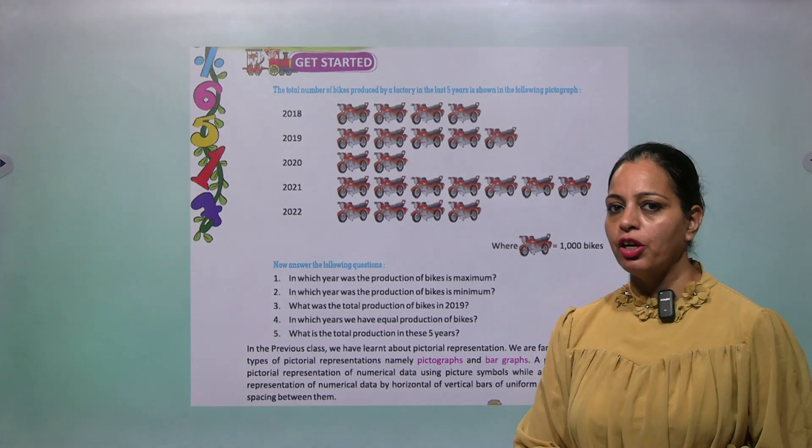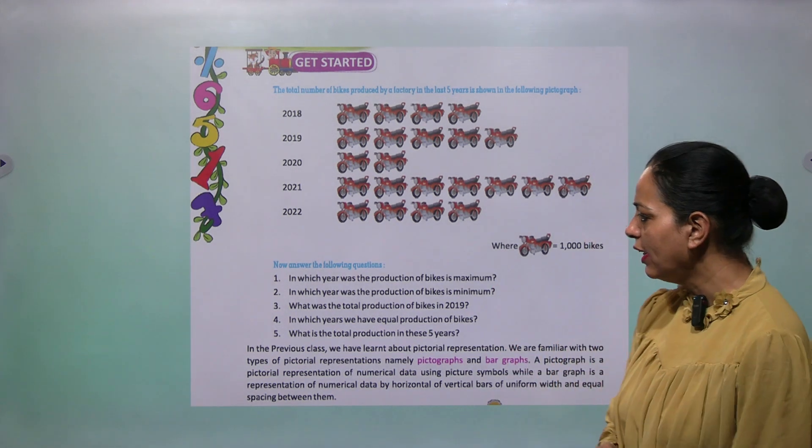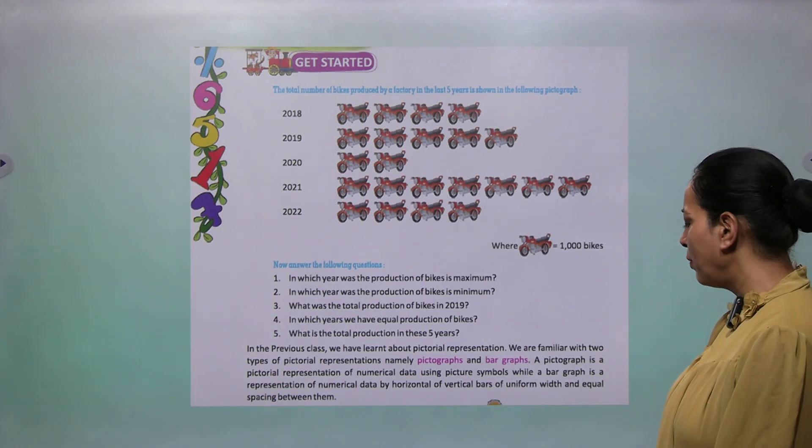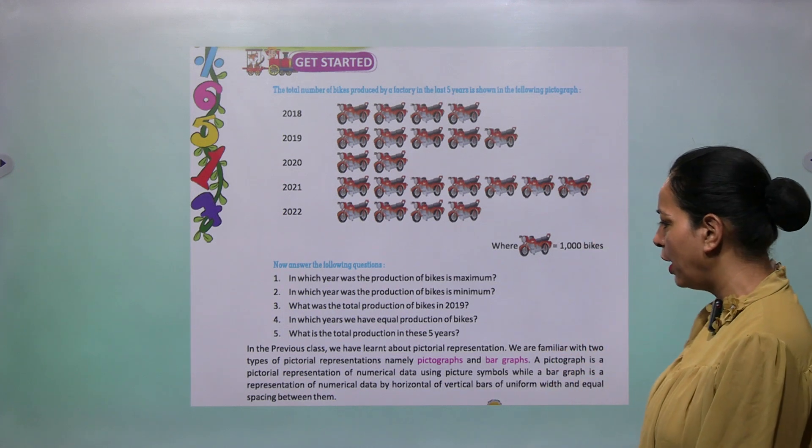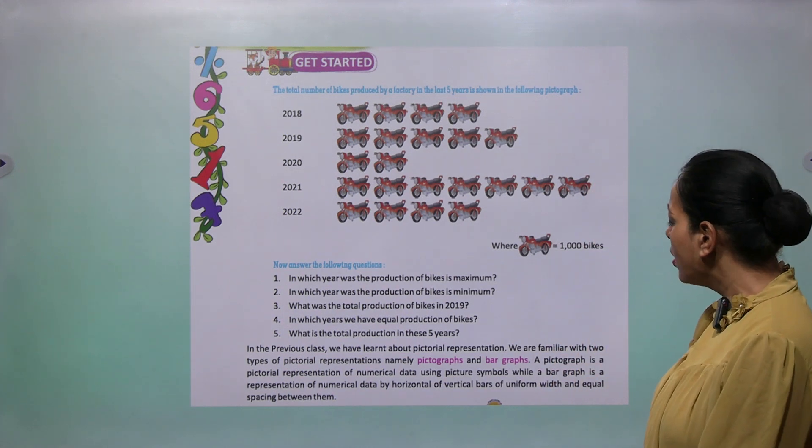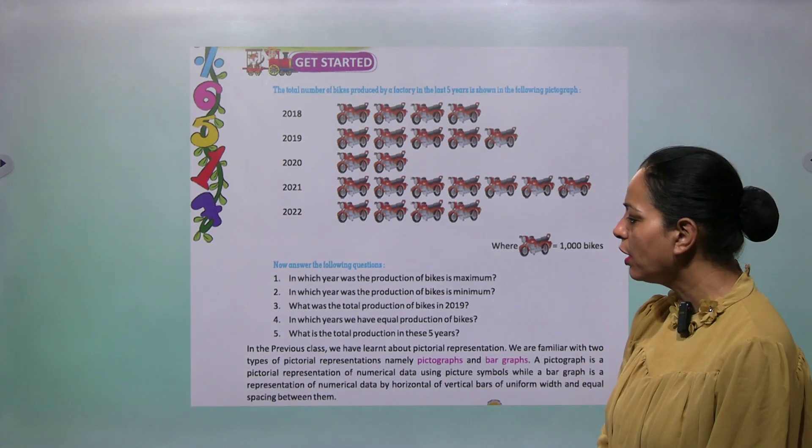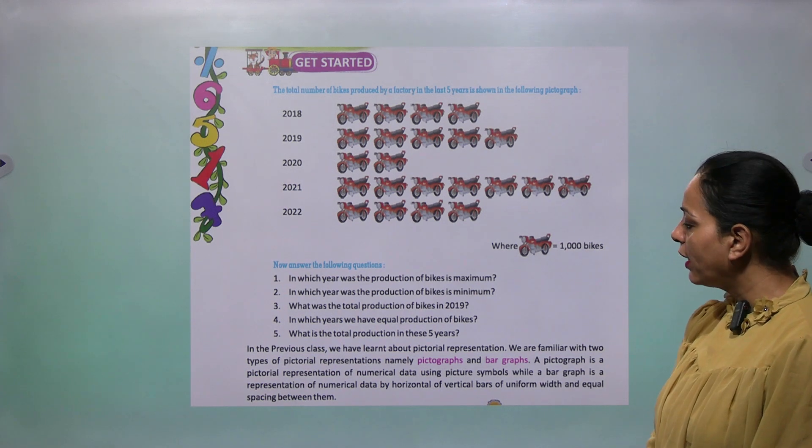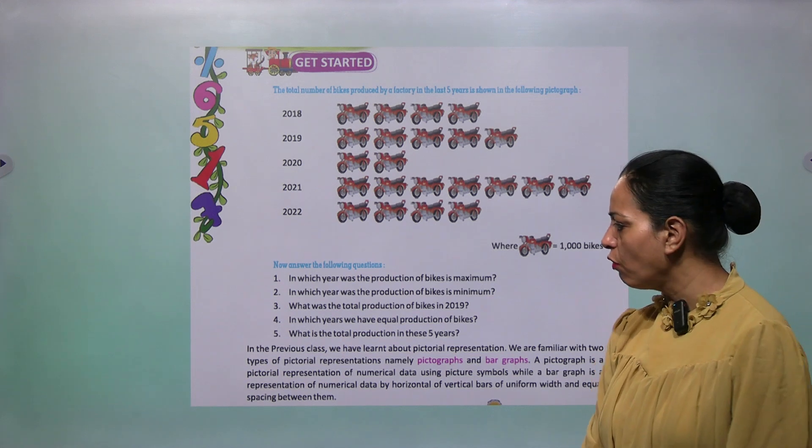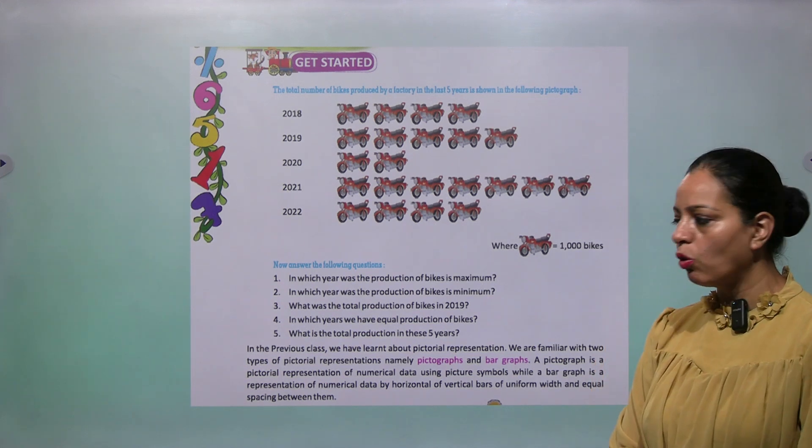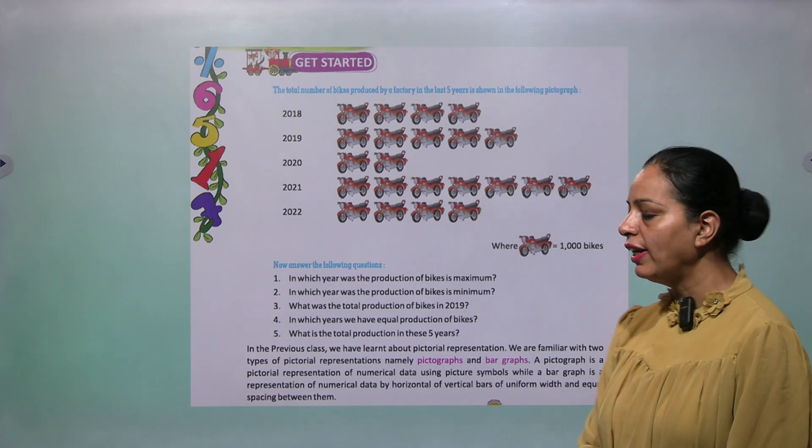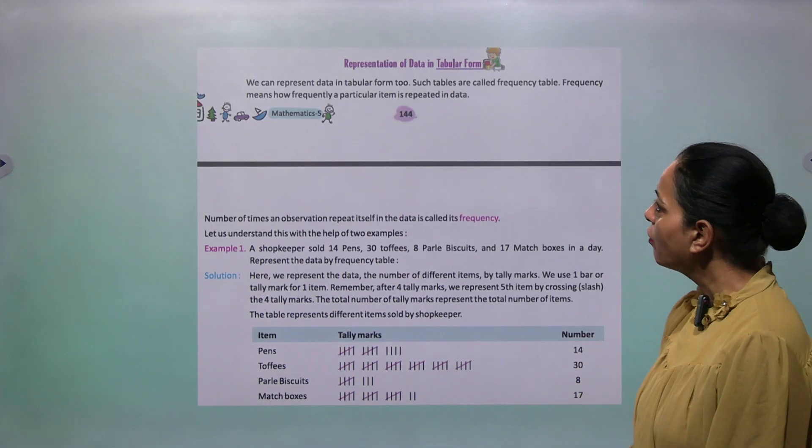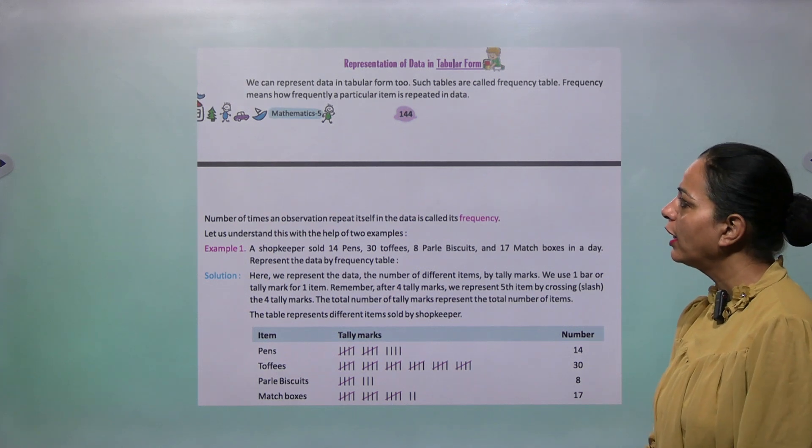In the previous class we have done such type of questions. Now we are doing once again. In the previous class we have learned about pictorial representation. We are familiar with two types of pictorial representation, namely pictograph and bar graph. A pictograph is a pictorial representation of numerical data using picture symbols, while a bar graph is a representation of numerical data by horizontal or vertical bars of uniform width and equal spacing between them.